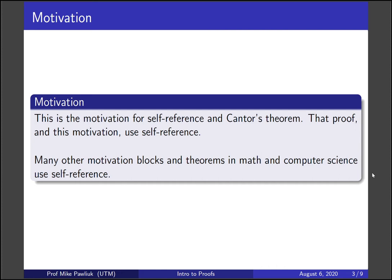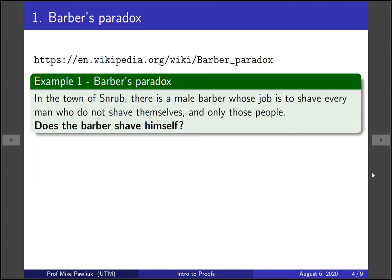Many other motivation blocks, narrations, and theorems in math and computer science also use self-reference. We're going to look at many examples of paradoxes of self-reference. The first example is called the Barber's Paradox.